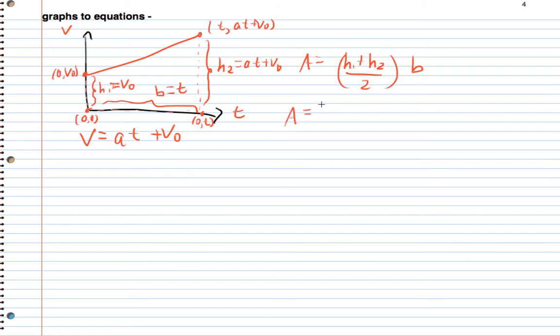So let's go ahead and plug all that in. So we're going to have v naught plus at plus v naught all over 2 times the base, which is t.